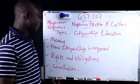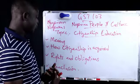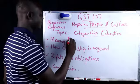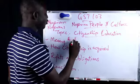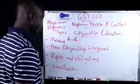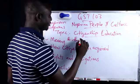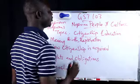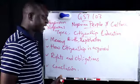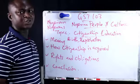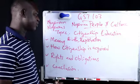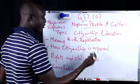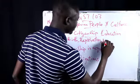Let's look at the ways citizenship is acquired everywhere in the world. First, by birth — those who are born by Nigerian parents or are born in Nigeria. Second, citizenship can be acquired by registration, where you go to the embassy or the relevant authority to register as a citizen, fulfilling all the required documentation and requirements.